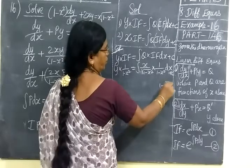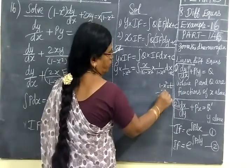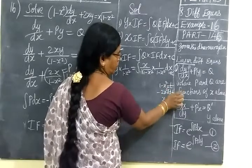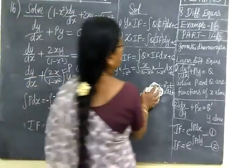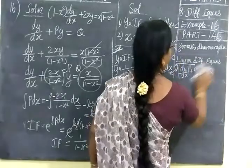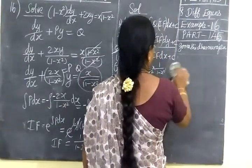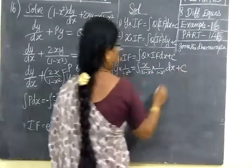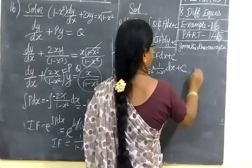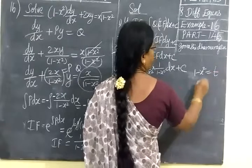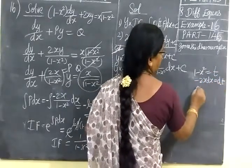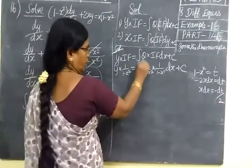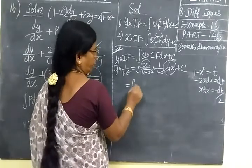Now substitute: let 1 minus x squared equal to t. Differentiating, minus 2x dx equals dt. So x dx equals minus dt by 2. Substituting, the integral becomes the integral of 1 by root of t times 1 by t, times minus dt by 2, which simplifies further.